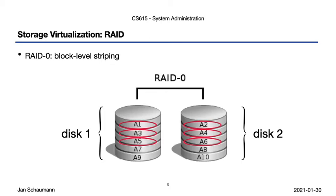However, there's one problem. If any one of these two disks fails — and from experience as well as simple probability, we understand that the more disks you have, the more likely it is that a disk will inevitably fail — if a disk goes away, then you have lost half your data, and you're unlikely to be able to reconstruct what you lost. So RAID 0 provides I/O performance benefits, but no fault tolerance.